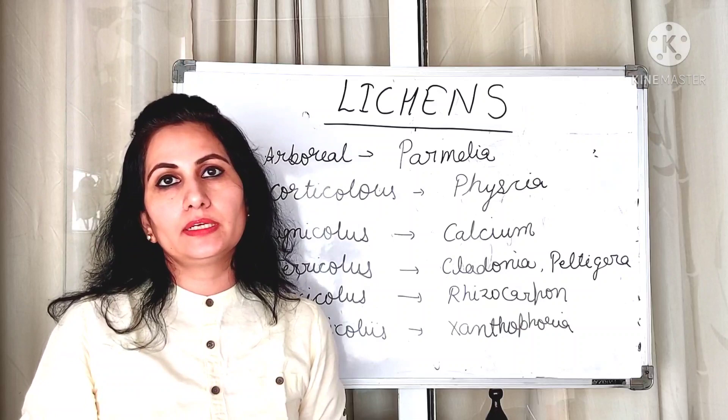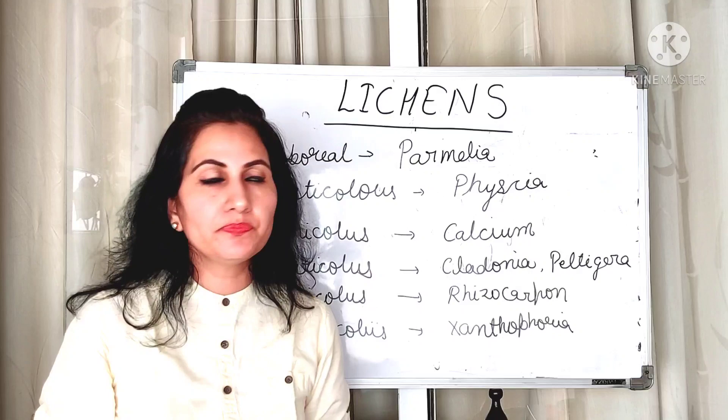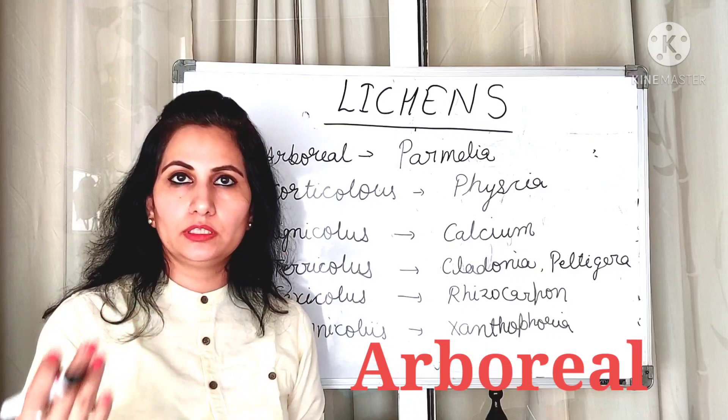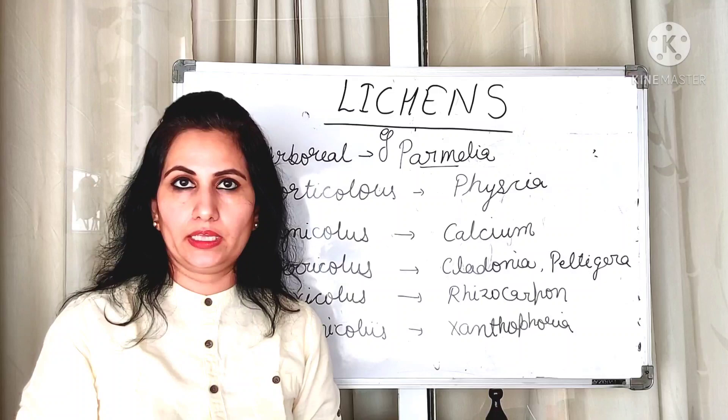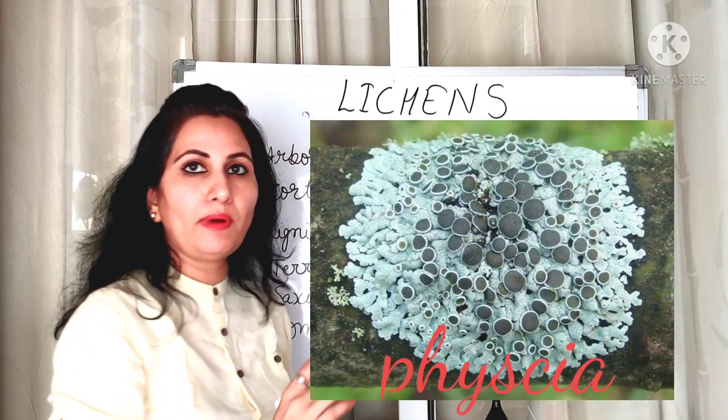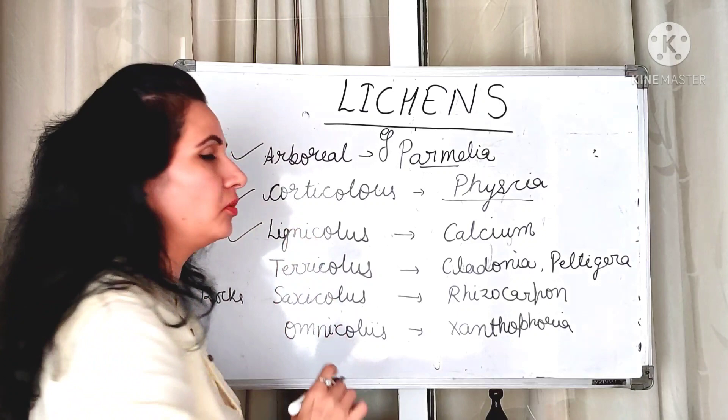Now we will discuss the habit and habitat of different lichens. The first habitat type is arboreal — meaning lichens living on trees — and an example is Parmelia. Next is corticolous, meaning lichens living on the bark of a tree. Examples of corticolous lichens are Physcia and Parmelia.